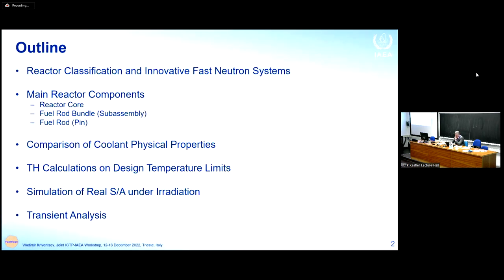I will remind you what innovative fast neutron systems are and where liquid metal cooled fast reactors fit. Then I'll discuss how to simulate thermohydraulics for main reactor components such as reactor core, rod bundle or sub-assembly, and fuel pin. We will compare coolant physical properties mainly for sodium and lead, and give examples of thermohydraulic calculations depending on temperature limits or power. Real thermohydraulic simulations are much more complicated and cannot be covered in one lecture, but we will touch on the methods.